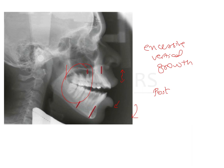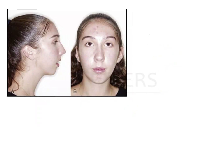The mandible is going to rotate down and continue to grow, so the posterior teeth are going to interdigitate and be in occlusion. However, the anterior teeth will have an open bite — a non-occlusion. The first clinical feature you will see is that the patient has excessive facial height, increased facial height, also known as long face syndrome.